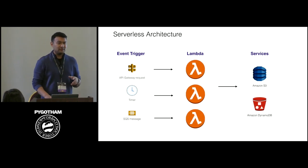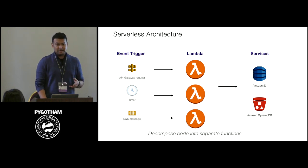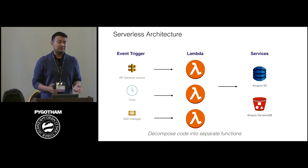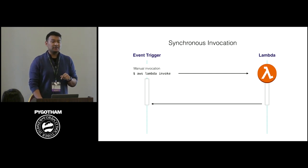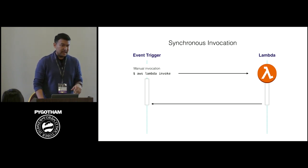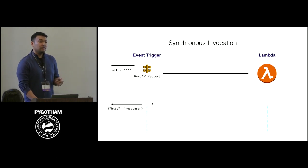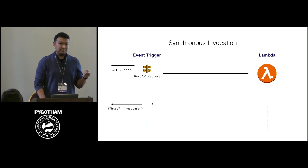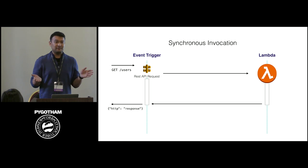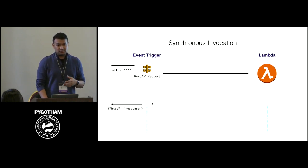You'll also start thinking about breaking your application into multiple independent functions — just like breaking a Python module into multiple functions. There are three invocation types. The first is synchronous invocation, where you ask Lambda to invoke something and it blocks until you get the result back. A common use case is API Gateway: a user makes a GET request to, say, /users, API Gateway invokes the Lambda function, it retrieves data from a database, returns the value, and that gets formatted as an HTTP response.